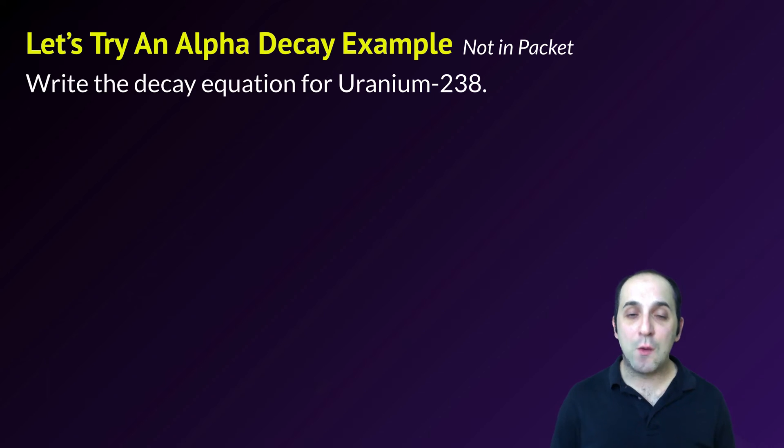Let's do an alpha decay equation first. This is actually not in our packet, but I want you to write the decay equation for uranium-238. If you think you can do it already, pause the video and give it a shot. First, I know that I'm dealing with uranium, and the symbol for uranium is U. It's uranium-238, so its mass is 238, and the atomic number for uranium is 92.